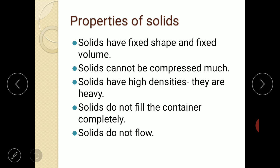Let us study the properties of solids. Common solids include ice, wood, coal, stone, iron, and brick. Solids have a fixed shape and fixed volume — for example, a brick has a fixed shape. Solids cannot be compressed much. Solids have high densities and are quite heavy. Solids do not fill a container completely and they do not flow.